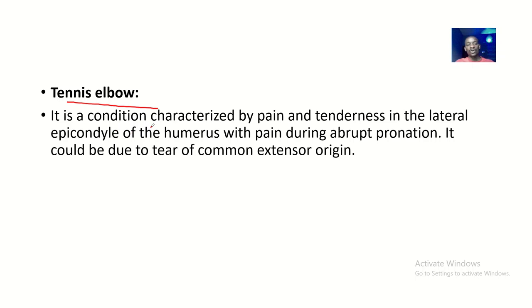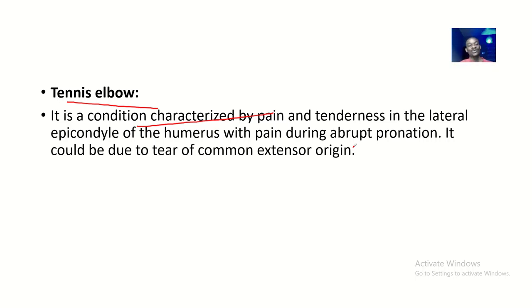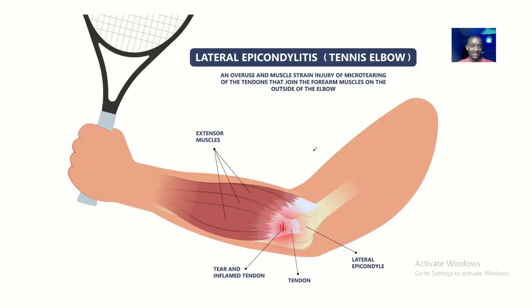Tennis elbow is a condition characterized by pain and tenderness in the lateral epicondyle of the humerus, with pain during abrupt pronation — pronating abruptly, like when you're hitting your tennis shot carelessly. It could be due to a tear of the common extensor origin. This is also called lateral epicondylitis — inflammation of the lateral epicondyle region.